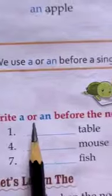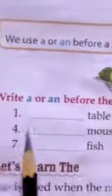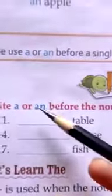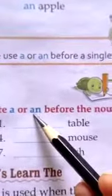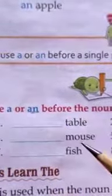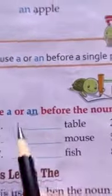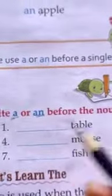Write A or AN before the nouns given below. We have to add A or AN in these words. So we have learned in yesterday's class that AN is used for the words whose first letter is vowels and A is used for the words which start with consonants.